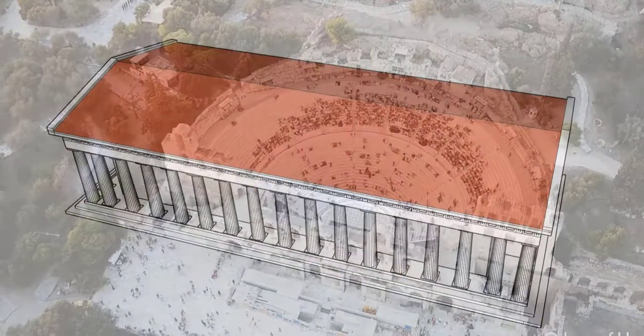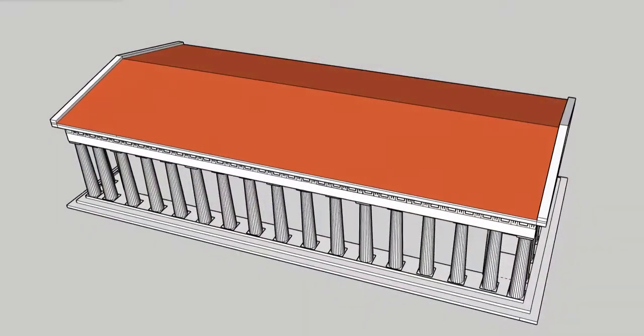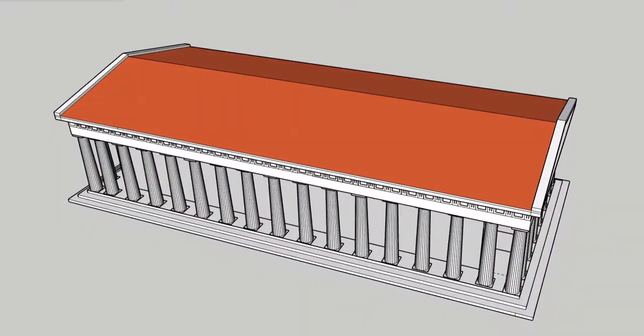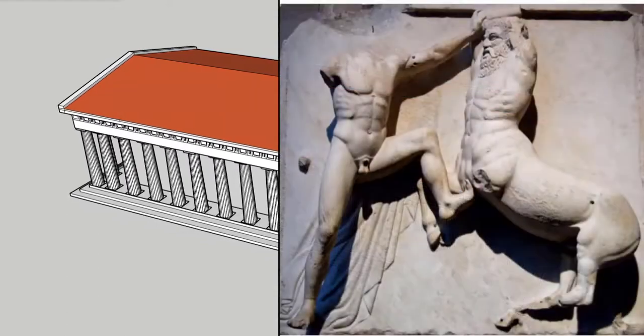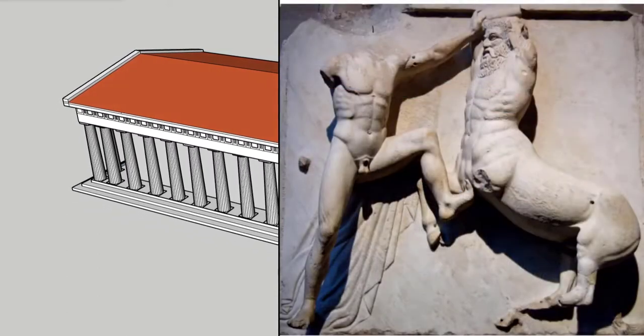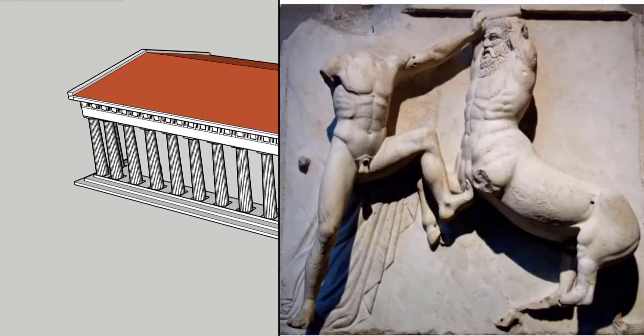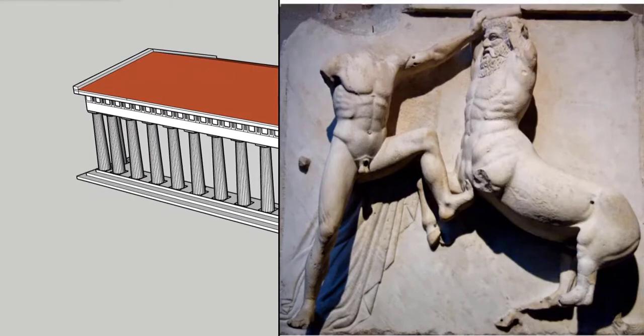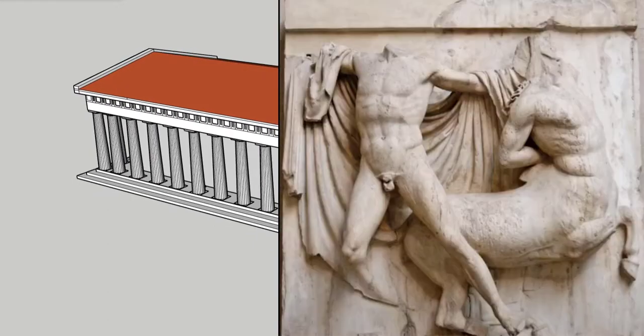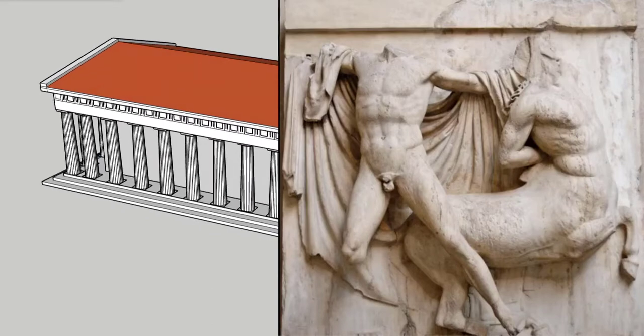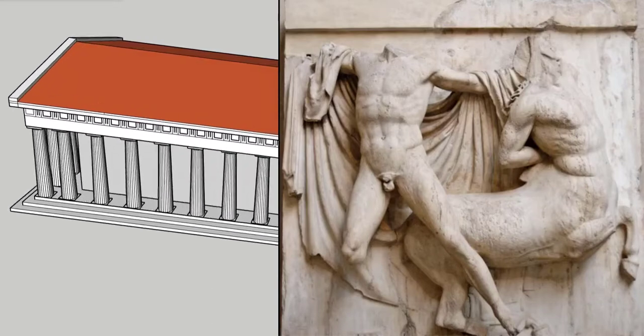But how can we square this image of the Parthenon with the jingoistic and combative egotism of the messages it displays in the reliefs that adorned it? The war of the gods against the giants, of the demigods and heroes against the centaurs, of the Greeks against the Trojans, and of the Athenians themselves against the Amazons. That's a lot of war.